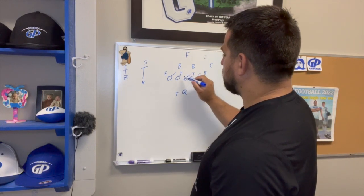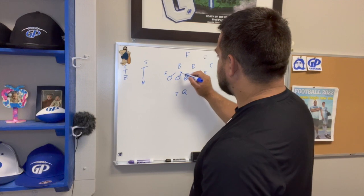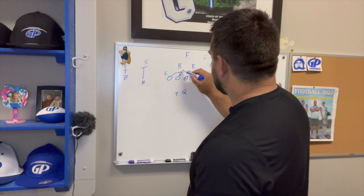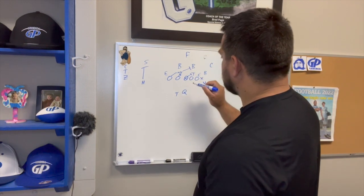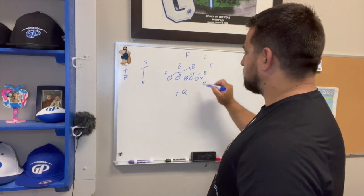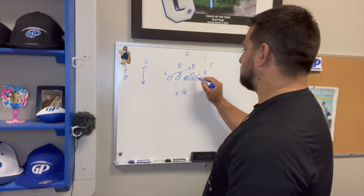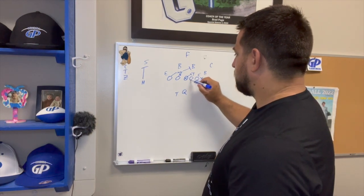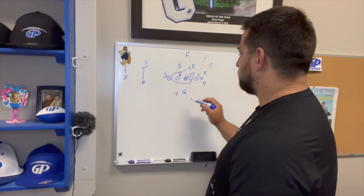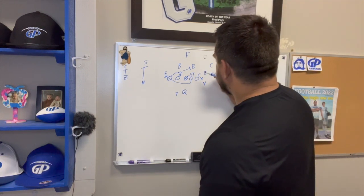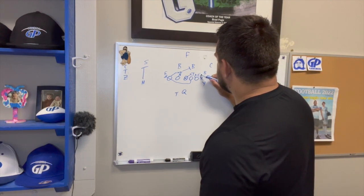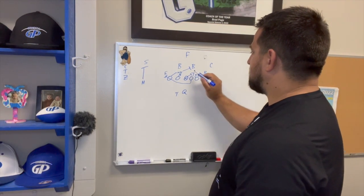The tackle is probably going to help here and work to the backside backer. The center has a really important job — if they give a three-technique to our tight end side, the center has to make sure that defender does not get across his face, because if he blows it up our play is dead from the beginning. Same thing with the tackle — he's got to go inside-out with the tight end, kind of fan block so nothing comes back side.